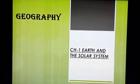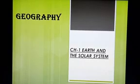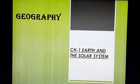Before we start, in this chapter we are going to read about the celestial bodies or heavenly bodies, which include stars, planets, satellites, asteroids, comets and meteors. The distance between the heavenly bodies, that is celestial bodies, in the universe is measured in light years.